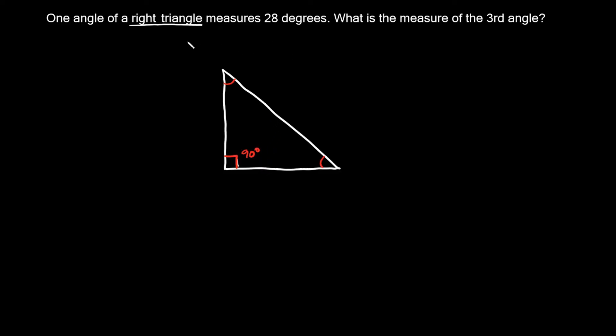Going back to the problem: one angle of a right triangle measures 28 degrees. We know it's a right triangle, so one angle is 90 degrees, and another is 28 degrees. What is the measure of the third angle? This angle we'll label x. This is the third angle we're looking for.